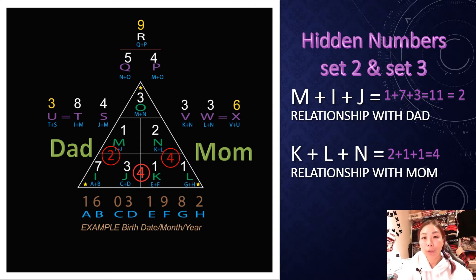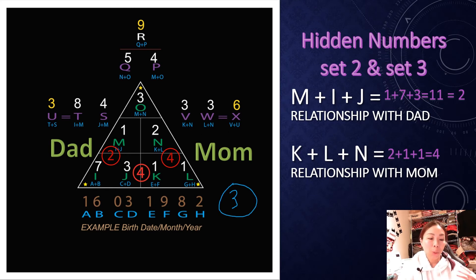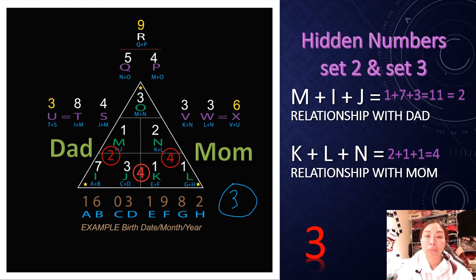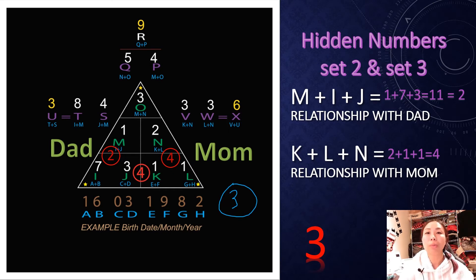If you get a number 3, and it happens on the left side, that means you always get into conflict with your dad and you always get annoyed with each other. If it happens on the right side, that means you always end up arguing with your mom and you don't even know why — because your connection reflects conflict.